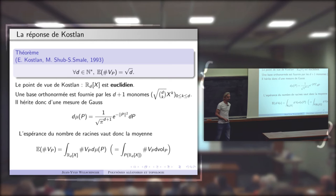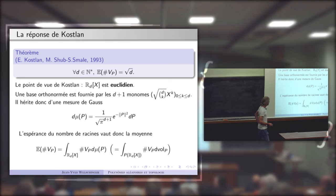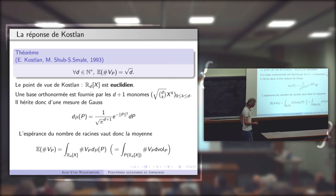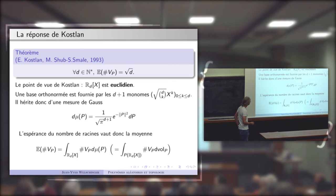Pourquoi cette mesure de probabilité différente est-elle plus naturelle géométriquement ? Je vais vous en donner une première raison maintenant, et beaucoup plus tard dans l'exposé une deuxième. Cette mesure vient en fait de la géométrie kählérienne.